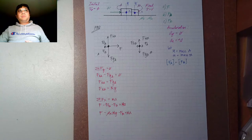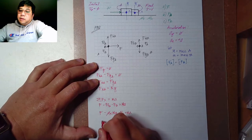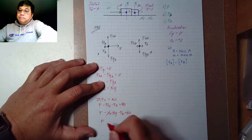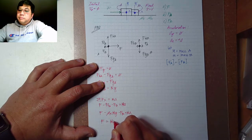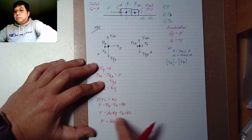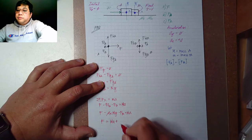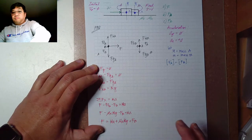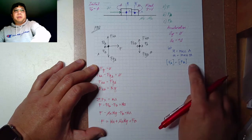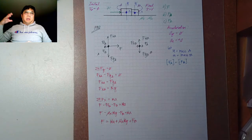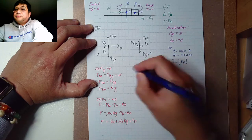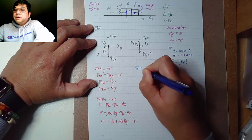Now we can simplify by rearranging. Moving the friction term and F_B to the other side gives: F equals M times A plus μ_k times M times g plus F_B. At this point we don't yet know F_B, but we know that the magnitude of F_A equals the magnitude of F_B. All we need to do now is analyze block B.